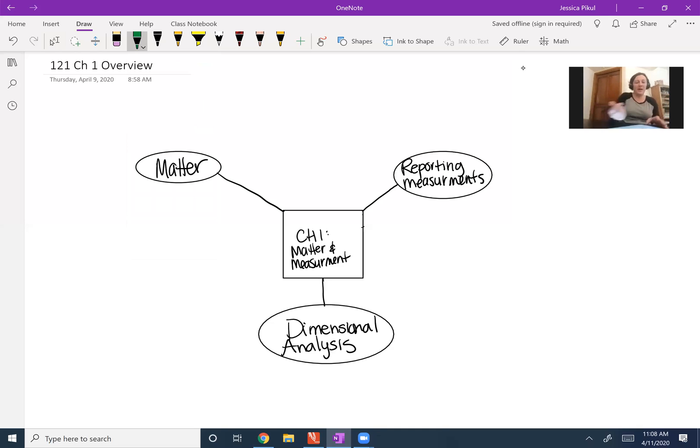The chapter begins by introducing chemistry as a study of the behavior of matter and matter itself. Now to study that, that means we have to study everything from energy to how matter reacts to how it behaves physically. The physical states for matter that we're going to cover in this class are solids, liquids, and gases. And we'll spend a lot of time in chapter seven going over these in more detail.